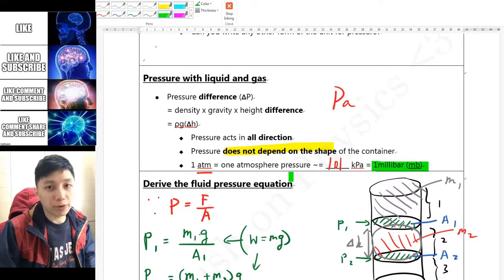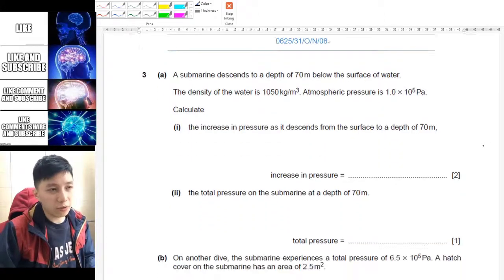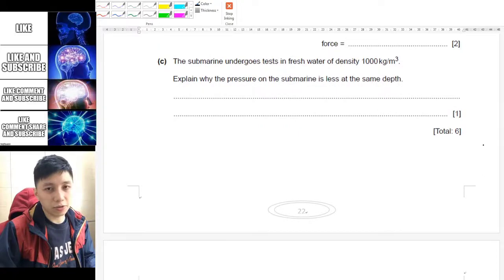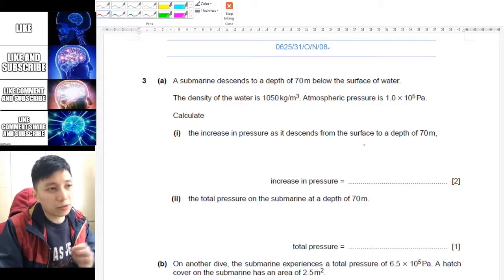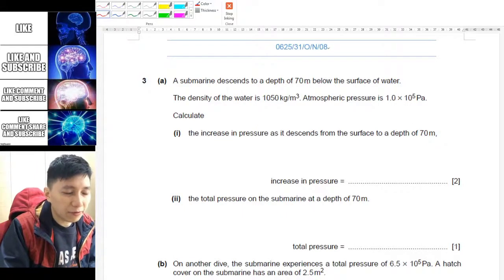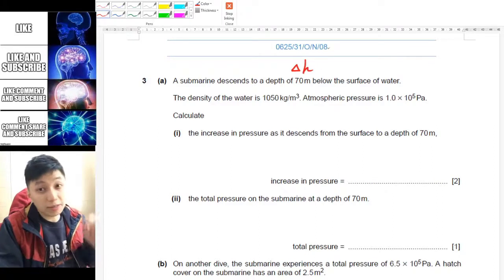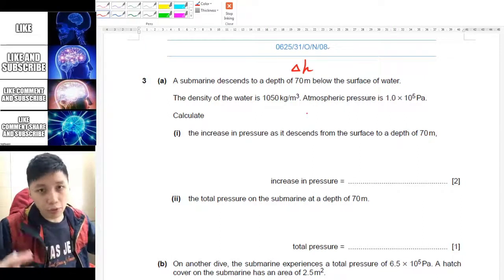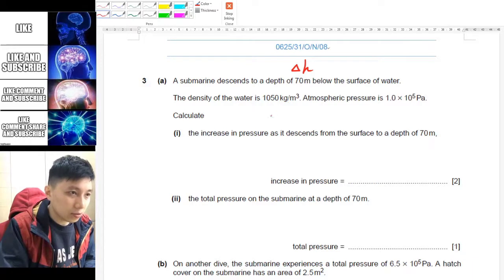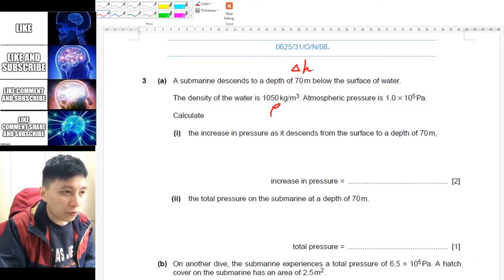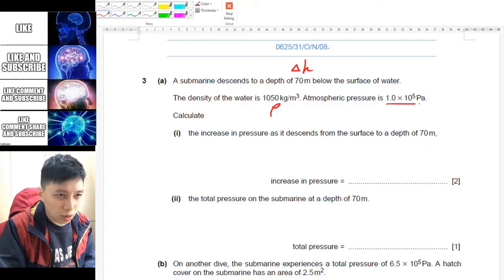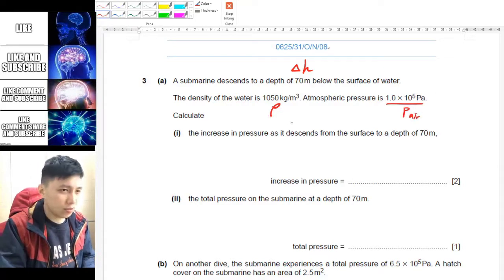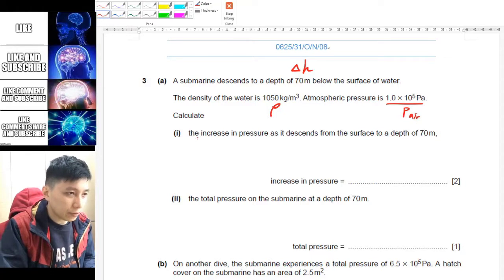Now let's practice yourself with this question on page 22. Pause the video now and try it. A few moments later. Okay, so the question tells you that the submarine descends 70 meters, so I would say this is delta h. So write the symbol next to your number, it's a technique you can have that will help you get to the approach more quickly. Density is ρ, so it's given to you. Atmospheric pressure is this one, so this is like the pressure for the air.